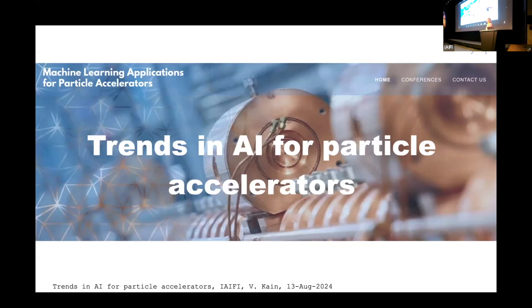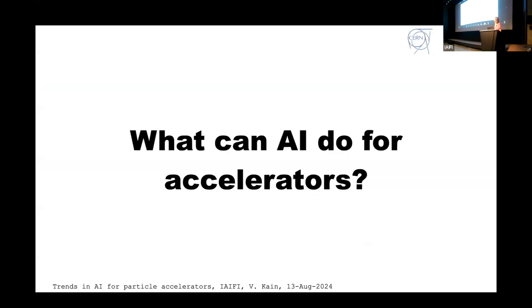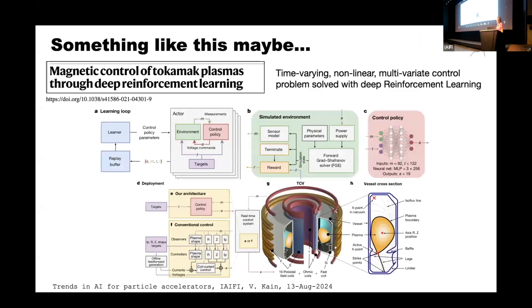Thanks for the introduction and thanks for inviting me here to talk about particle accelerators and the trends within the community. I start with a little motivation and asked the question: what can AI do for us? For a big part of the community, it was probably something like what DeepMind did for the magnetic control of tokamak plasmas through deep reinforcement learning — coming up with an algorithm to solve hard time-varying nonlinear multivariate control problems with deep reinforcement learning.